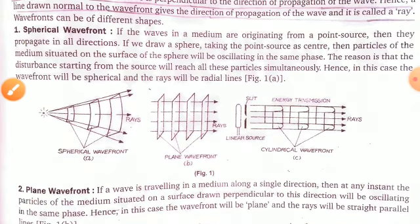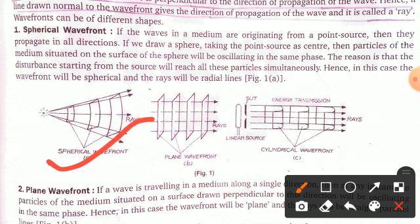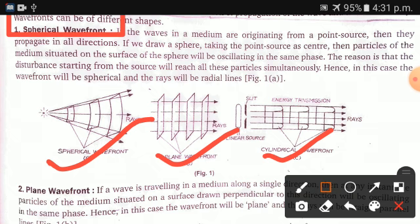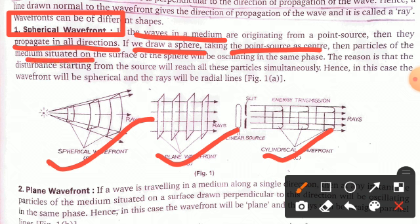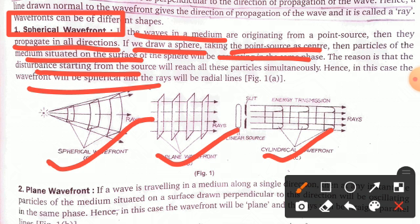Wavefronts can be of different shapes. There are three types: spherical, planar, and cylindrical. For the spherical wavefront: if waves in a medium originate from a point source, they propagate in all directions. Drawing a sphere with the point source as center, the particles on the surface of the sphere oscillate in the same phase, since the disturbance from the source reaches all of them simultaneously. Hence the wavefront is spherical, with radial rays.